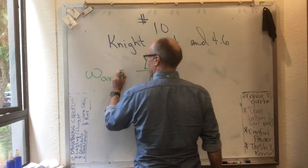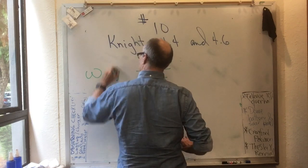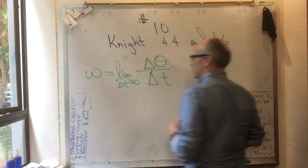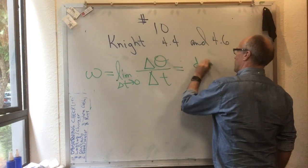And if we took the limit that delta t goes to zero, so that we're looking at the angular velocity over an extremely short period of time, this would just be d theta dt.